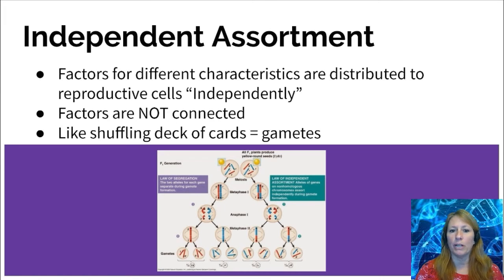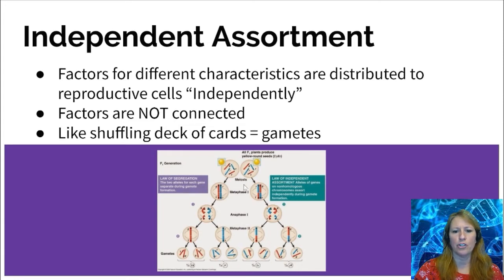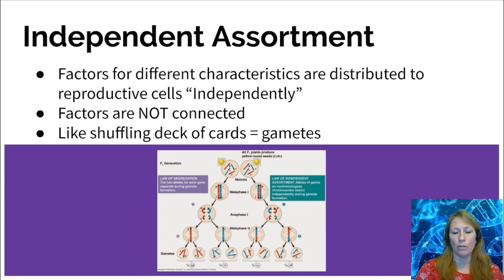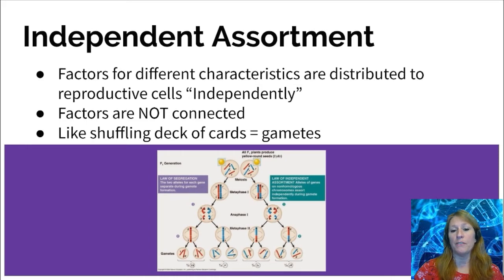For example, blonde hair and blue eyes tend to appear together, but you can have a child with blonde hair and brown eyes, or blue eyes and brown hair — so traits don't always stay linked. Looking at the diagram, chromosomes with dominant and recessive alleles line up differently during metaphase I. Depending on how homologous chromosomes line up on the spindle fibers, gametes can end up with different combinations of dominant and recessive alleles.